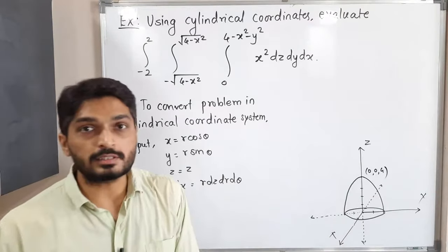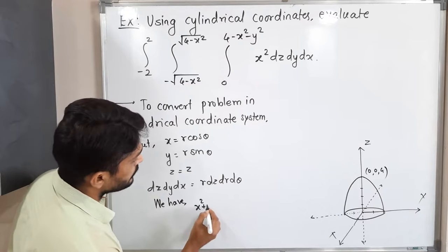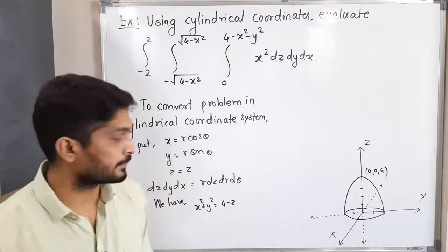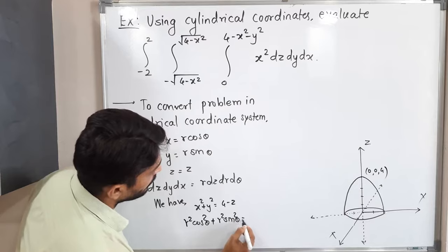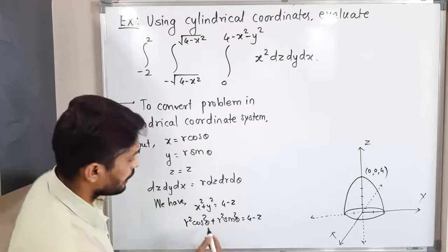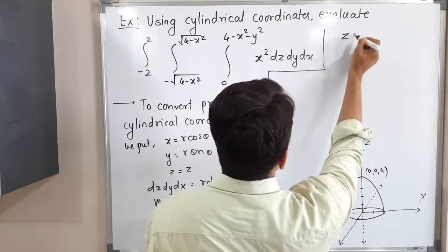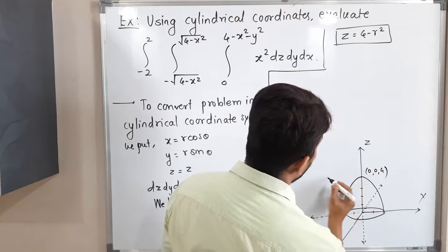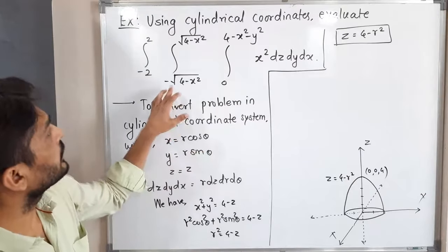Now we convert all equations into cylindrical coordinates. For x² + y² = 4 - z, substituting x = r·cosθ and y = r·sinθ gives r²cos²θ + r²sin²θ = 4 - z, so r² = 4 - z, or equivalently z = 4 - r². This is the equation of the paraboloid in cylindrical coordinates.